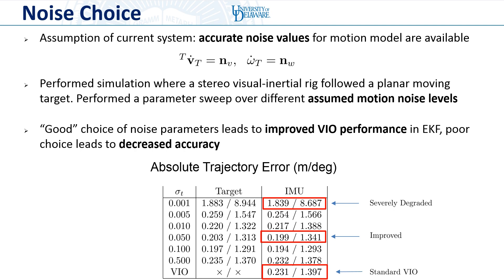The assumption that has motivated our choice of a joint estimator is that we have accurate noise values for the motion model. However, in many real-world scenarios, we may not know how closely a target follows a given motion model. As such, we now seek to investigate the effect of these model choices.